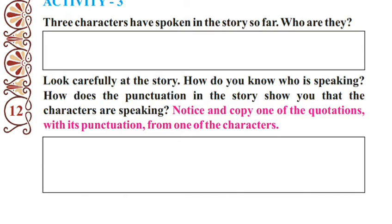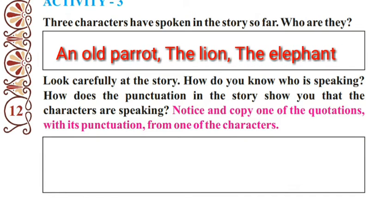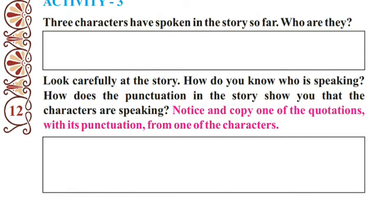Let's read: three characters have spoken in the story so far — who are they? Now we have seen our story and there are three characters who are talking. The three characters are the parrot, the lion, and the elephant. So in the first box you can write: the parrot, the lion, and the elephant.